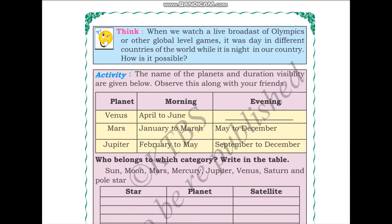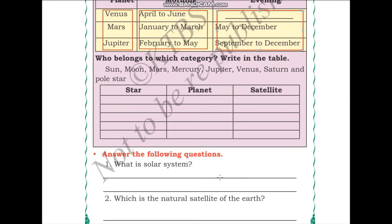The next activity gives the name of planets and their duration of visibility. They have given us planet names and the months when it is easier to see those planets in the morning and in the evening. You can take note of this. Next: who belongs to which category? You have a list of celestial bodies including the Sun, Moon, Mars, etc., and you have to classify them into star, planet, or satellite. I will leave this activity to you.